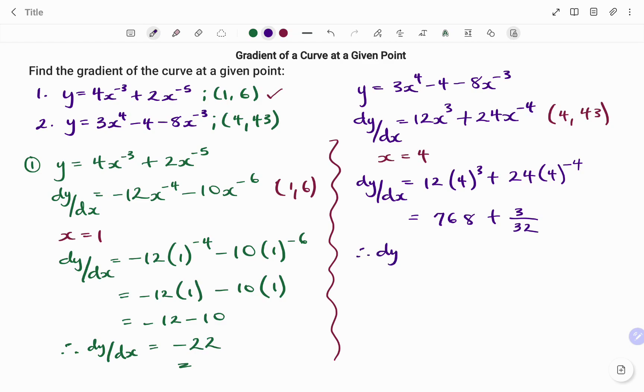So therefore, the gradient of the curve at the point will be 768 and 3 over 32. Thanks for watching. Bye.